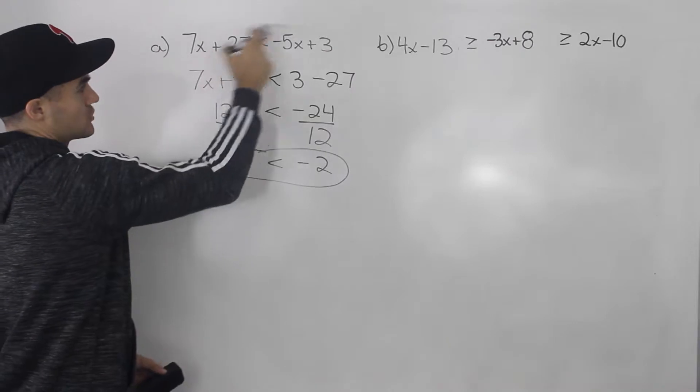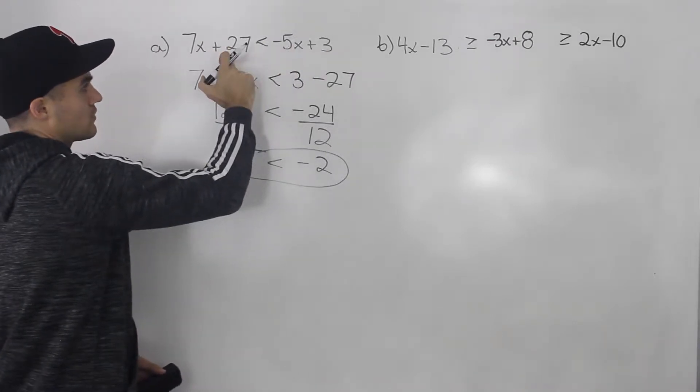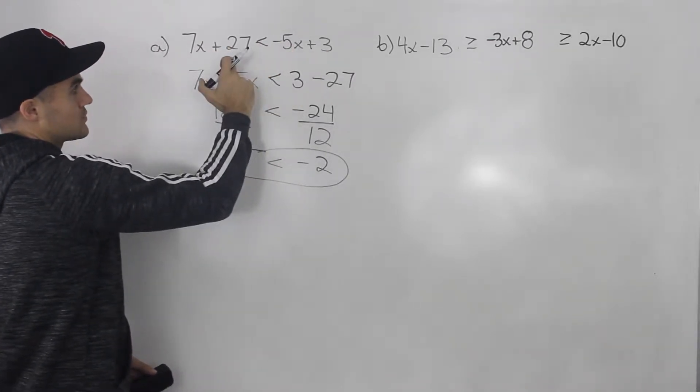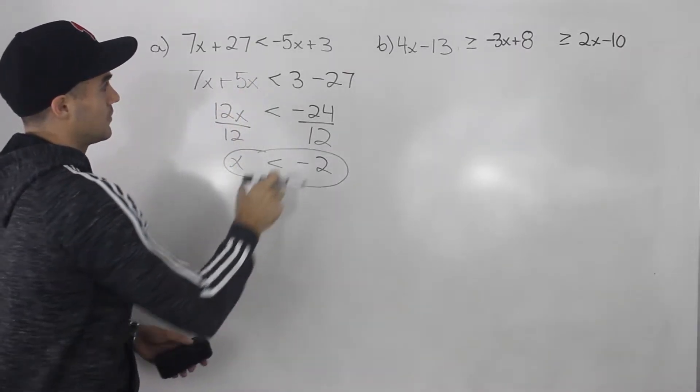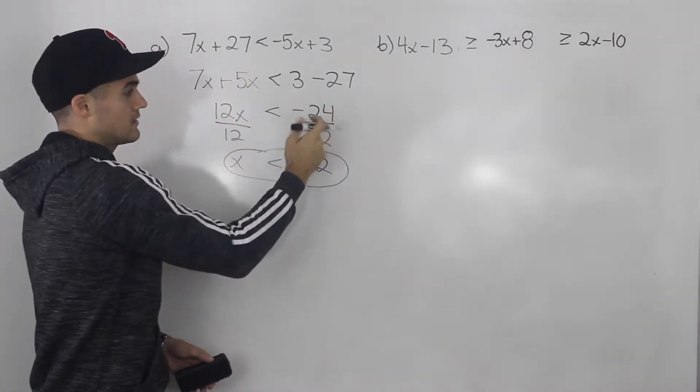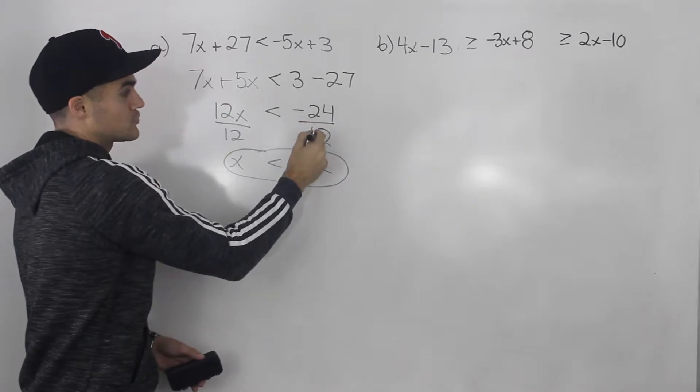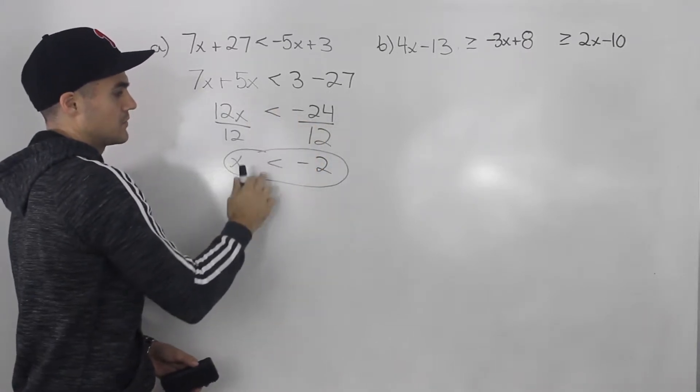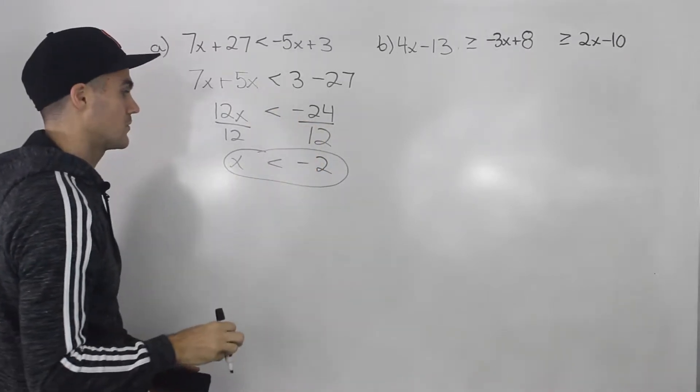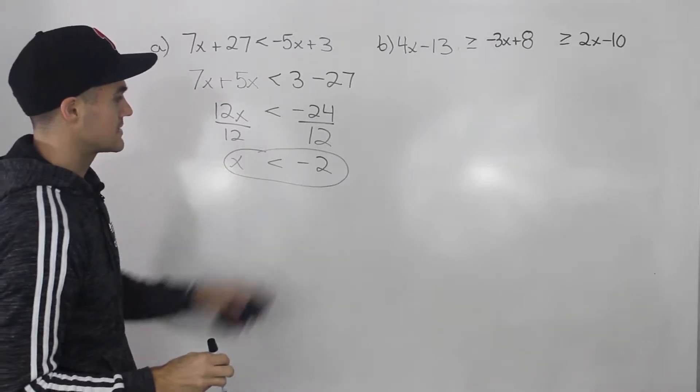We could have also brought the 7x over to the other side, brought this over, brought this 3 over to the left side. And then we would have negative 12x on this side. And then when we divide by negative 12, we have to flip this sign. But we would end up getting the same solution anyway. So x is less than negative 2.